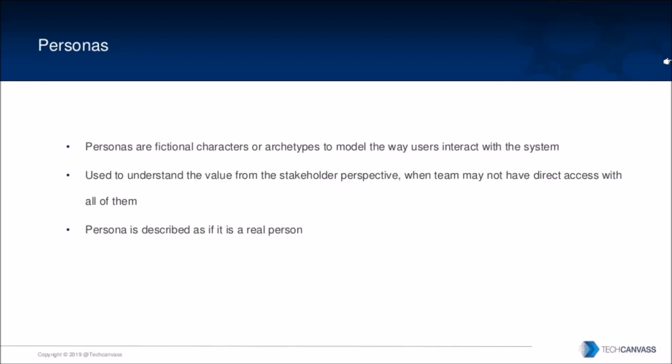Personas are fictional characters or archetypes to model the ways users interact with the system. They are used to understand the value from the stakeholders' perspective when the team may not have direct access to all of them. A persona is described as if it is a real person — you interview users and write down their various traits. This helps the development team get a good idea about what the user is and what their traits are, and they can also come up with a lot of suggestions.